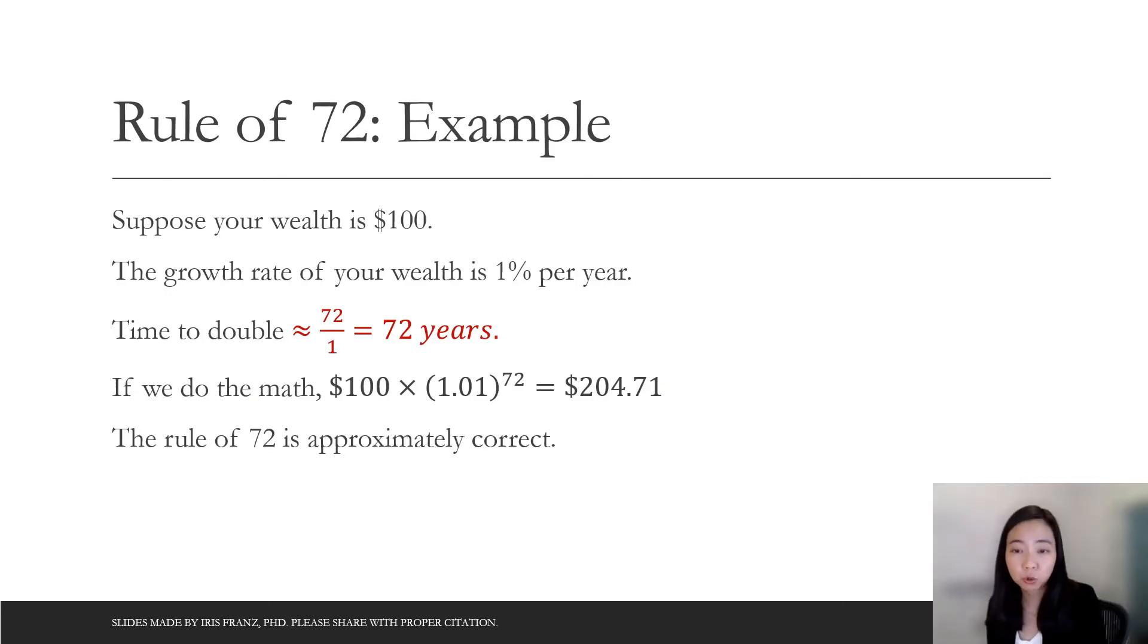So for example, if your growth rate of your wealth is 1% per year, then the time to double your wealth is approximately equal to 72 divided by 1, which is 72 years. If you do the actual math, then it will be 100 times 1.01 to the power of 72. Then you're going to get 204.71, which is approximately 200. So it tells you, the rule of 72 is approximately correct. It takes approximately 72 years for your wealth to double.